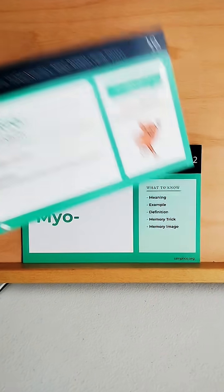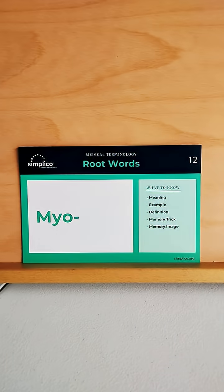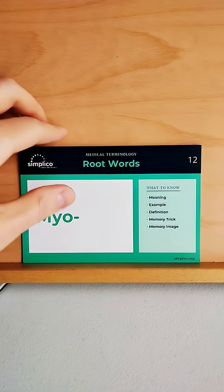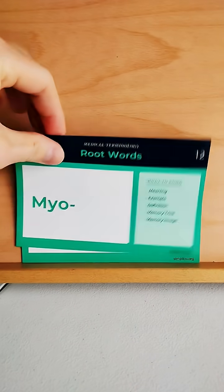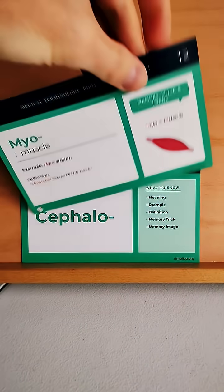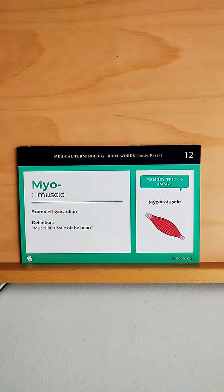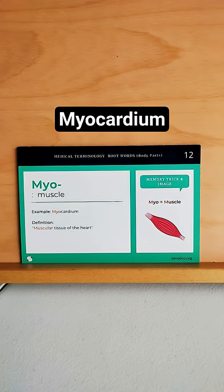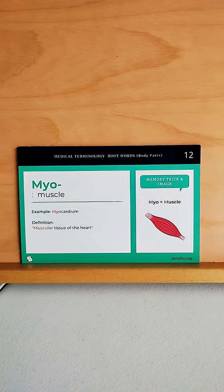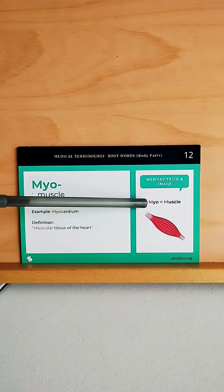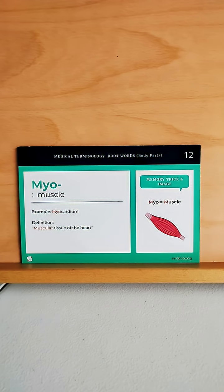Next we have myo. What does this mean? Myo refers to muscle. An example is myocardium, which is the muscle tissue of the heart. The memory trick is myo and muscle both start with M.